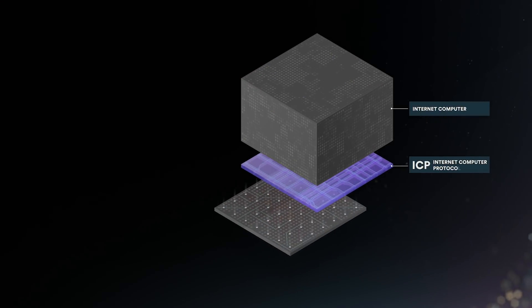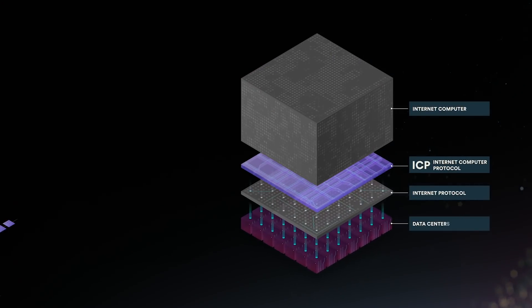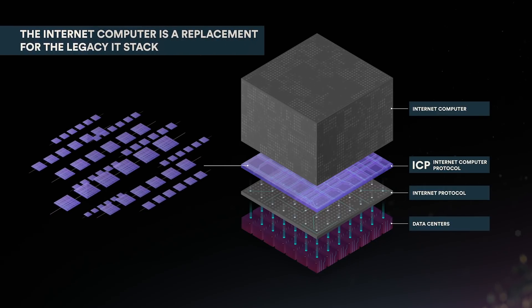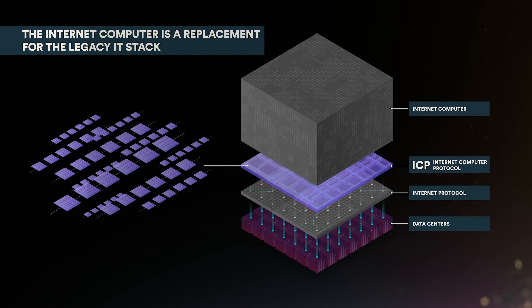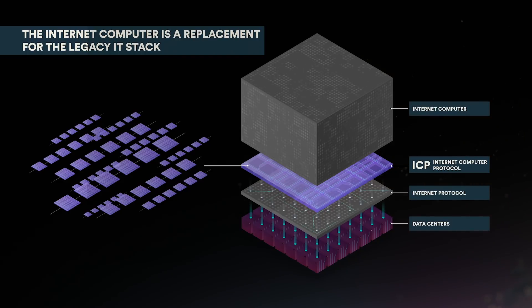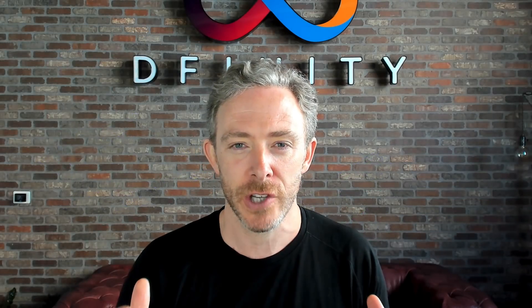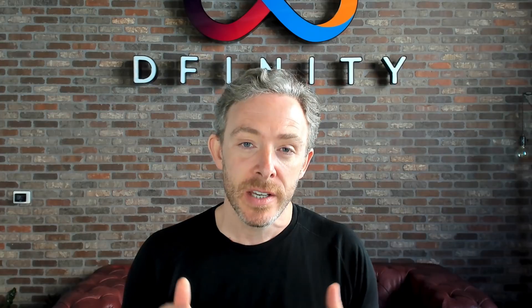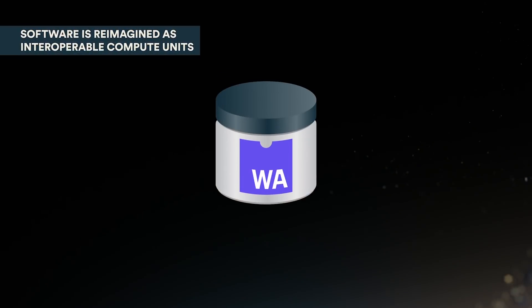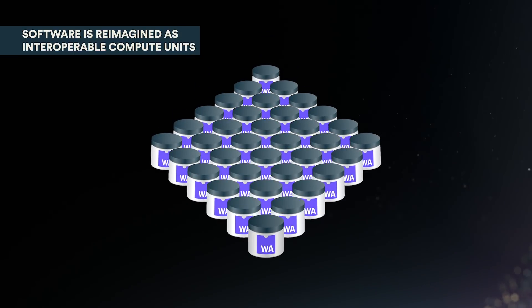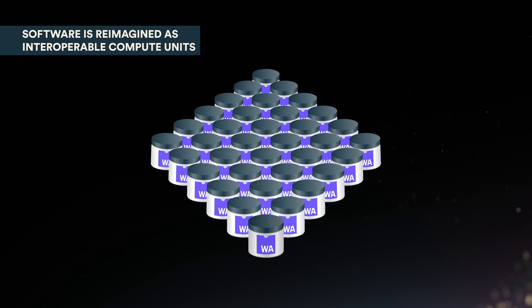The internet computer is a replacement for the proprietary legacy stack. It's created by independent data centers running ICP, which forms a new kind of blockchain computer. This has unbounded capacity and delivers performance that rivals the traditional cloud. The internet computer reimagines software as interoperable compute units called canisters. Software canisters are an evolution of smart contracts. They consist of a bundle of WebAssembly bytecode and the memory in which that bytecode runs.